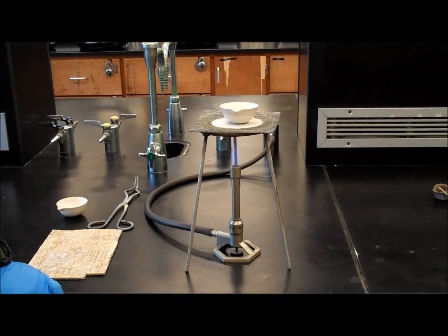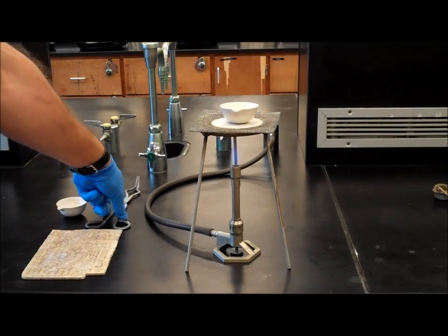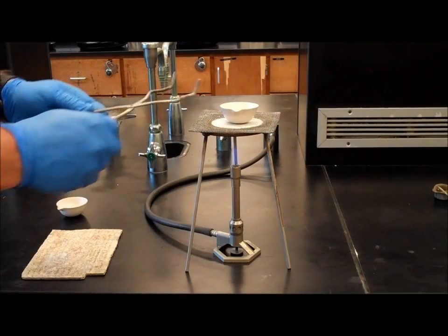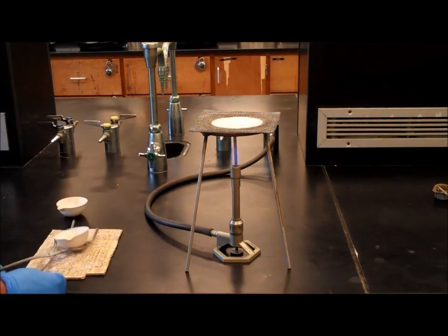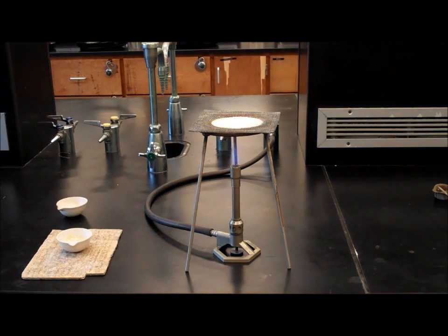After the time is up, you will remove the crucible using your tongs again and place it onto your heat-resistant board and allow it to cool.